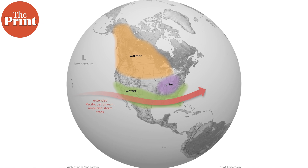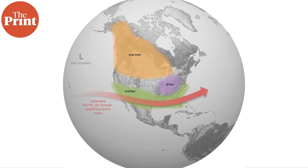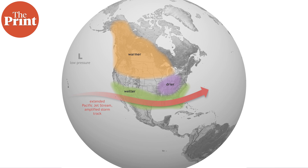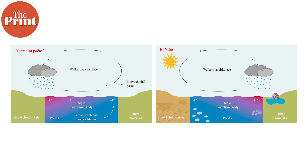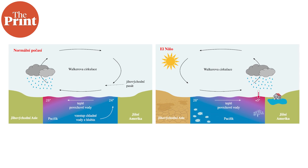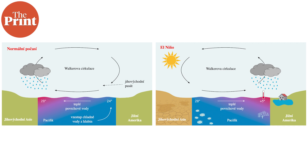The El Niño year contributes to extreme levels of precipitation due to the Pineapple Express. El Niño is a phenomenon when warmer sea temperatures in the Pacific Ocean change rainfall patterns and atmospheric circulation patterns, influencing the winds that carry jet streams and atmospheric river systems.